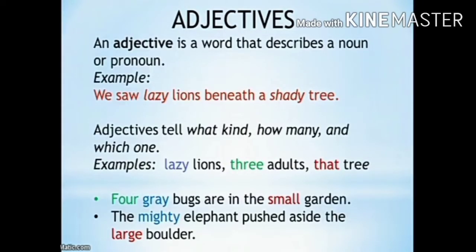An adjective is a word that describes a noun or pronoun. For example: 'We saw lazy lions beneath a shady tree.' Adjectives tell what kind, how many, and which one. So children, adjectives describe particularly nouns and pronouns — they tell what kind of thing it is, what kind of person they are, how many people or things there are, and which one it is. For example: lazy lions, three adults, that tree.